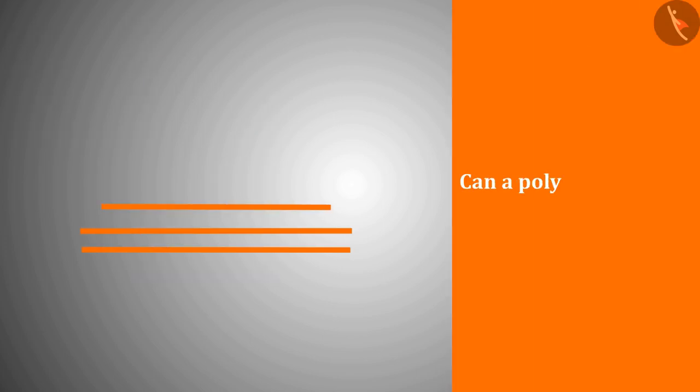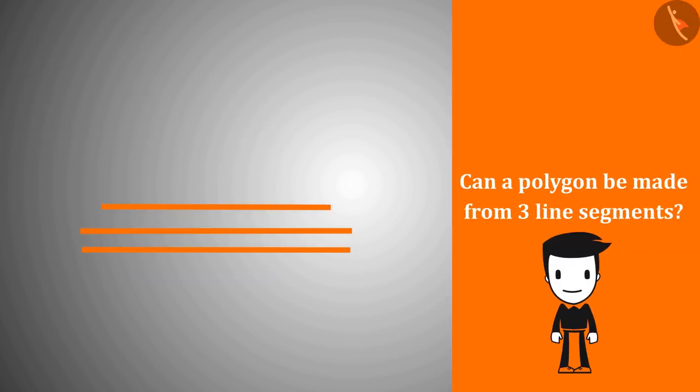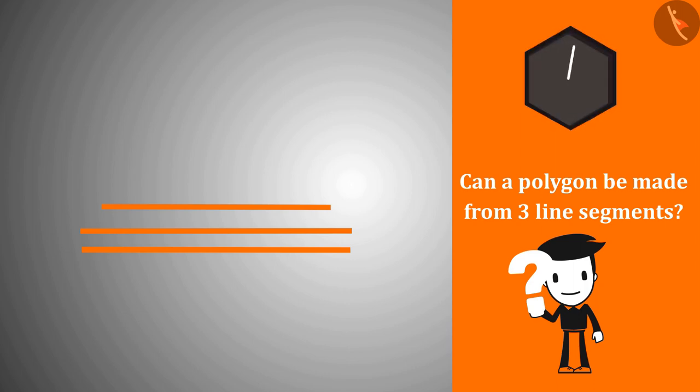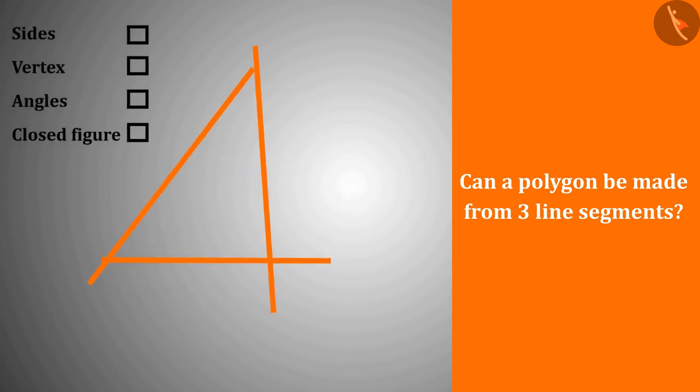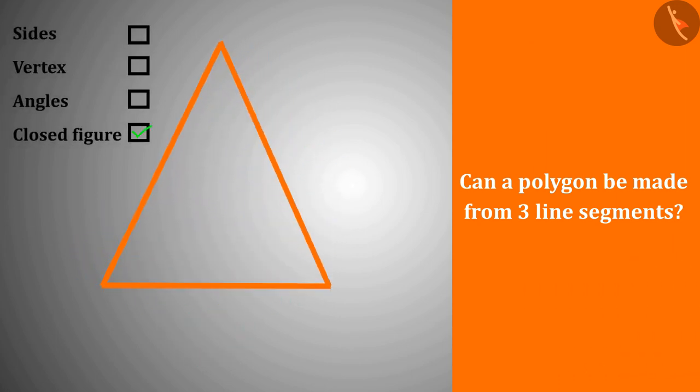So can a polygon be made from three line segments? Yes! Joining three line segments gives us a simple closed curve or shape which has three sides, three vertices, and three angles, which fulfills all the conditions for a shape to be a polygon.